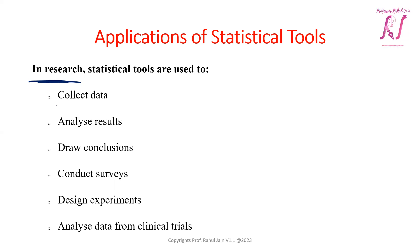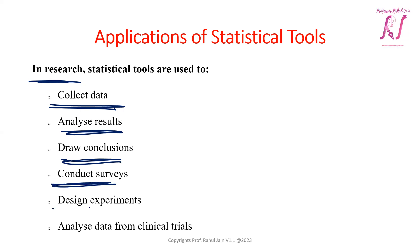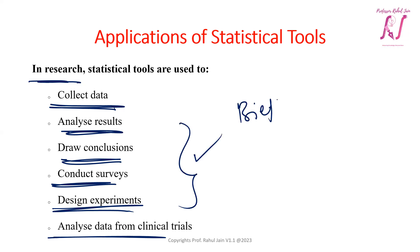In research, statistical tools are used for collecting data, analyzing results, drawing conclusions, conducting surveys, designing experiments, and analyzing data from clinical trials. This has been a brief overview of the applications of statistical tools across various fields — you can apply these concepts to derive expected applications in your own area.